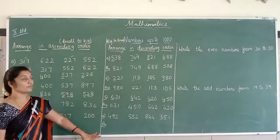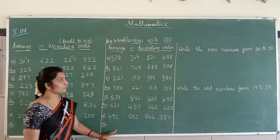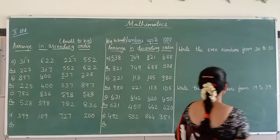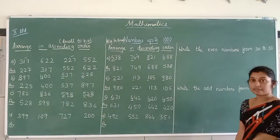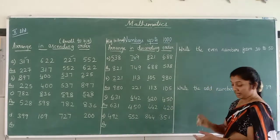So this is how you are going to write your descending order. So the last step is bigger. Next, write the even numbers from 30 to 50. Here you are going to write even numbers. What do you mean by even numbers? See, for example...